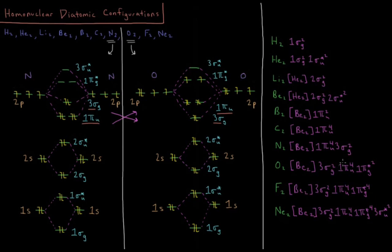Those start to fill 1πig*, so 1πiu4, 1πig*2. For fluorine, we add two more electrons into 1πig*, giving us 1πiu4, 1πig*4.